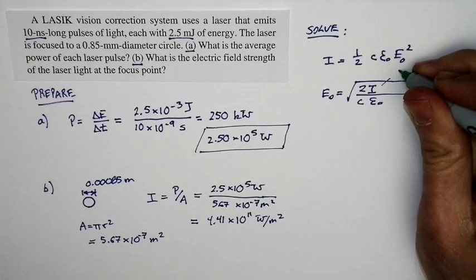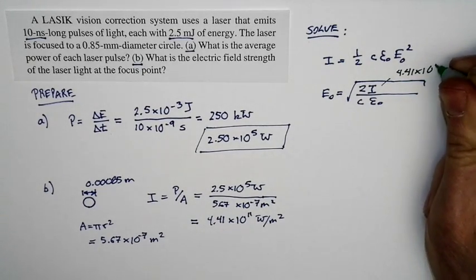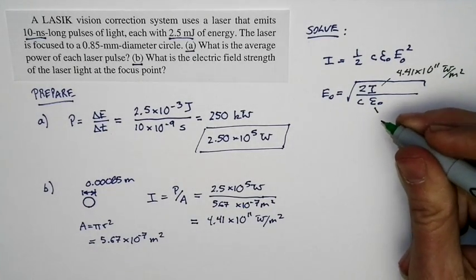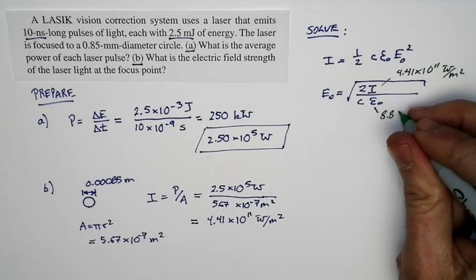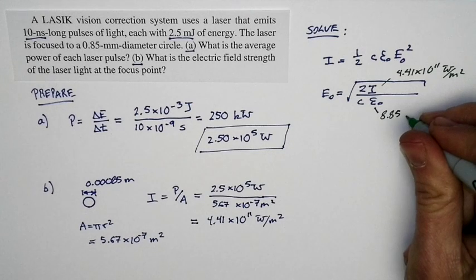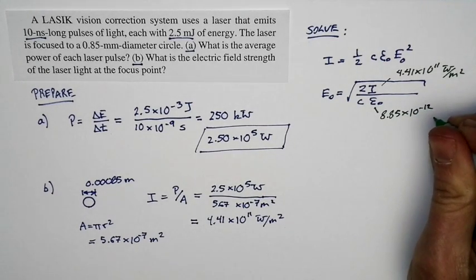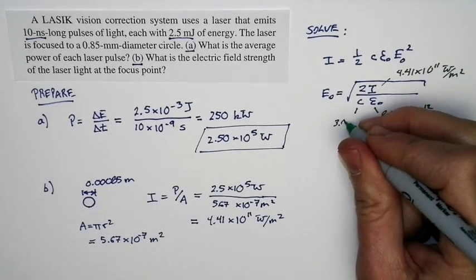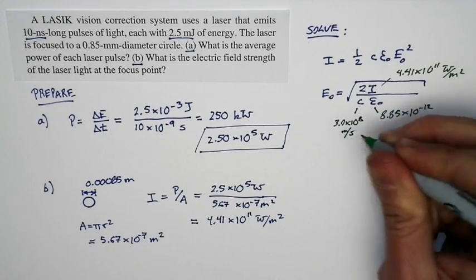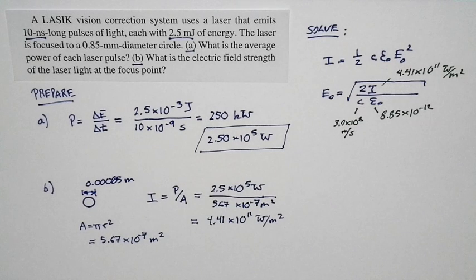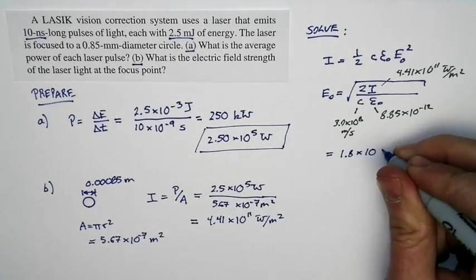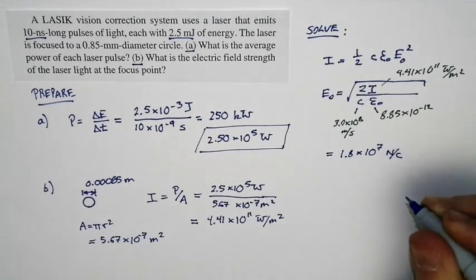The intensity is 4.41 times 10 to the 11th watts per square meter. We calculated that. This epsilon zero is something we learned about a long time ago. It's 8.85 times 10 to the negative 12th. And then C is the speed of light, that's 3.0 times 10 to the 8th meters per second. So we have everything we need in this expression. We can calculate the magnitude for the electric field. And if we do that, we get an electric field magnitude of 1.8 times 10 to the 7th newtons per coulomb.